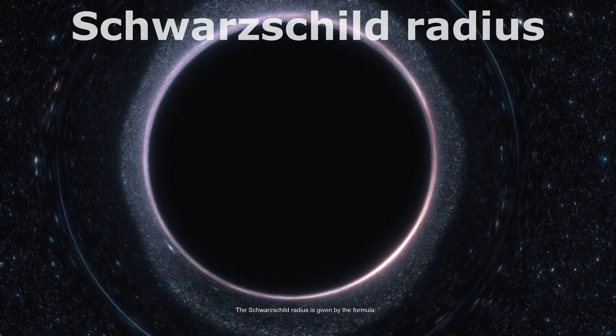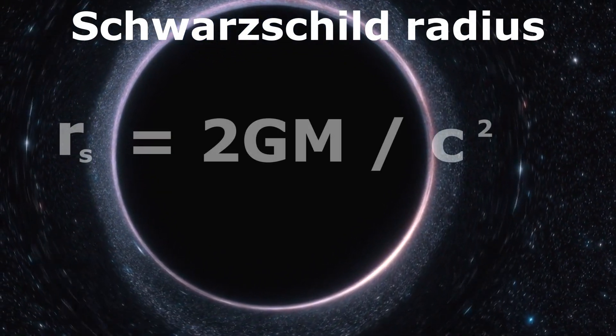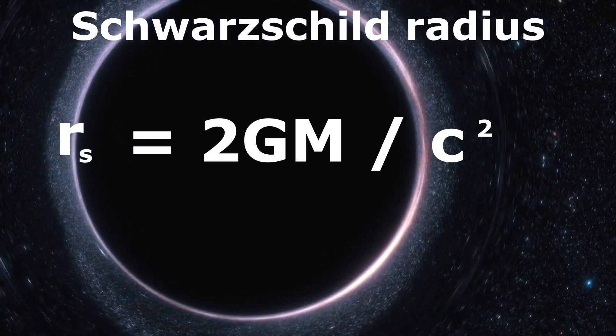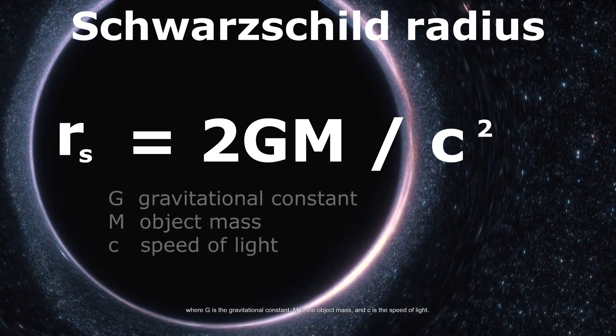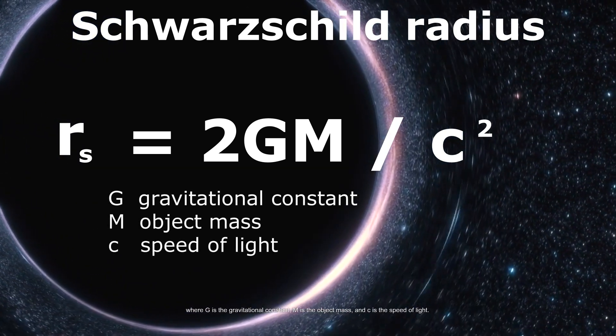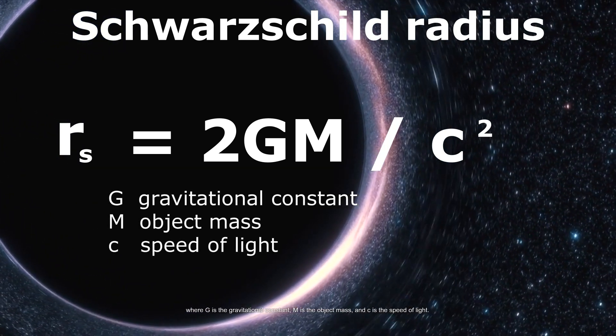The Schwarzschild radius is given by the formula where G is the gravitational constant, M is the object mass, and C is the speed of light.